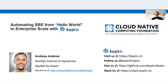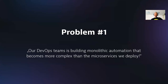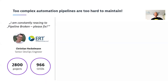Let me go back and give you an overview of why we actually built Keptn. We built Keptn to solve a couple of problems we've seen in our own organization and with users in our community. One of them is that a lot of DevOps teams are challenged with very monolithic automation in their pipelines, making it hard to deploy. For example, Christian Hecklmann is a DevOps engineer who constantly gets pinged on Slack saying 'pipeline broken, please fix,' managing 2,800 projects and 966 CI/CD pipelines.